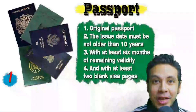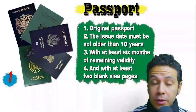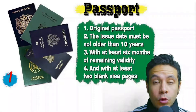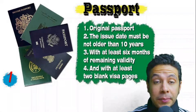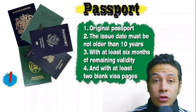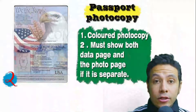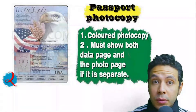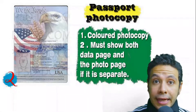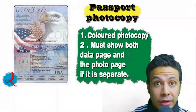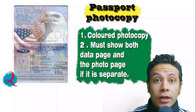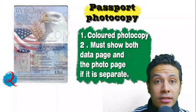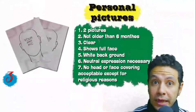Speaking about your passport, it must be original, not older than 10 years, with at least six months of remaining validity, and at least two blank visa pages for stamps. In many cases you will also need a passport photocopy — it might be one copy or more, preferred to be colored, with both the data page and photo page showing. In some cases you might be required to photocopy every single page, but generally only the data and photo pages are needed.